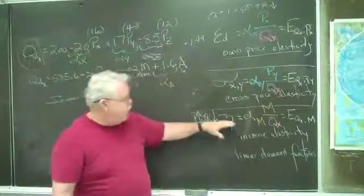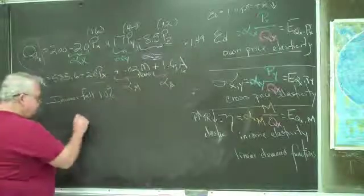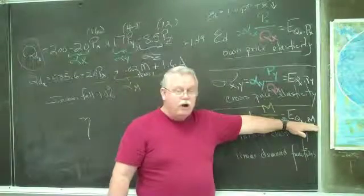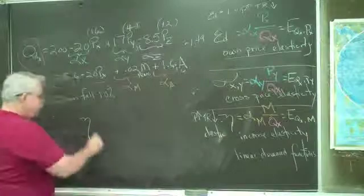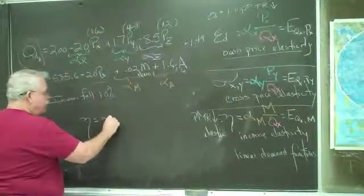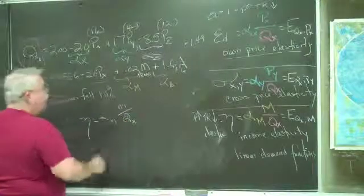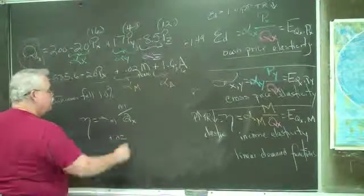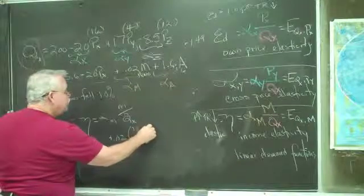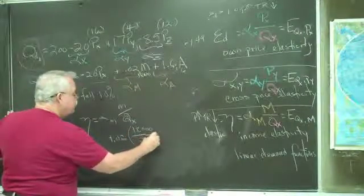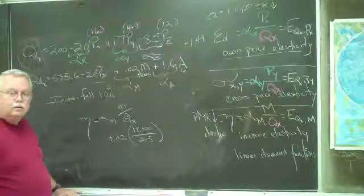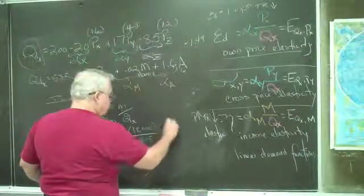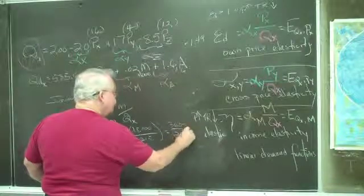So we go back and we calculate now the income elasticity. This is a little Greek letter, eta. The author uses this term over here, E_qx,m. Same thing though. And we're going to calculate it. Alpha_m times m over qx. Alpha_m is 0.02, positive 0.02. m is 18,000. And qx is 215. 2% of 18,000 is 360. 360 over 215 is?